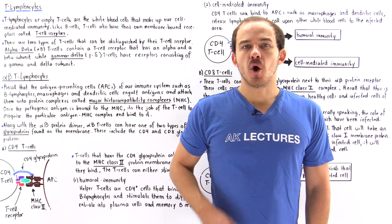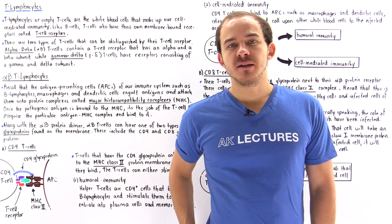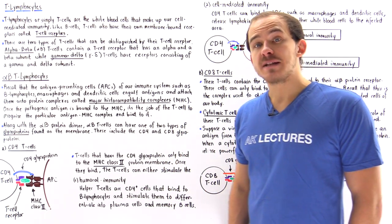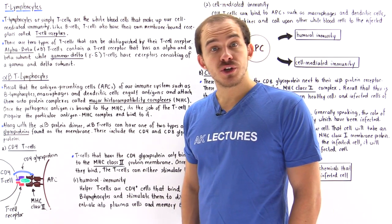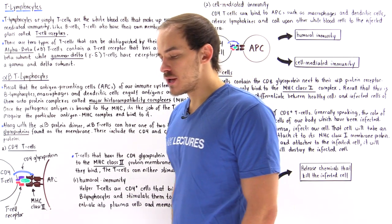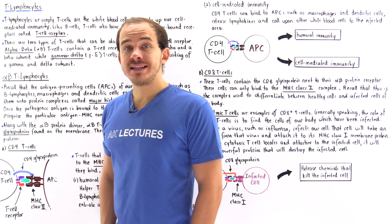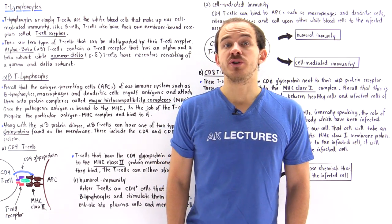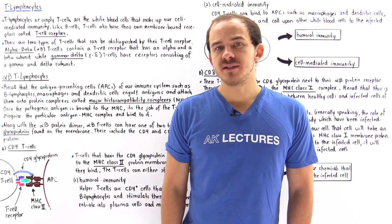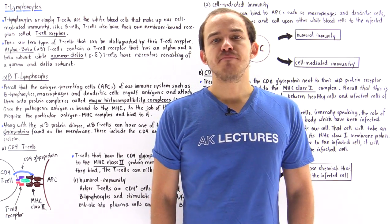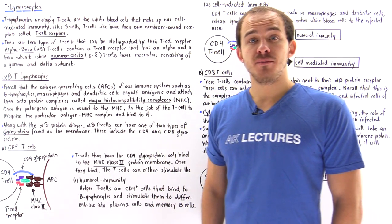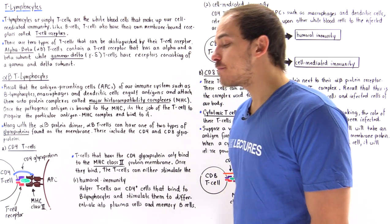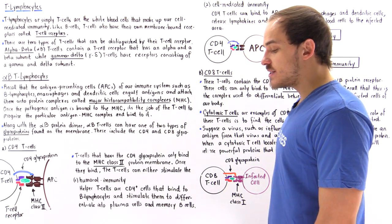Previously we focused on B lymphocytes, which are the cells that make up our humoral immunity. Now let's focus on T lymphocytes or T cells, which are the white blood cells that make up our cell-mediated immunity of our adaptive immune system.